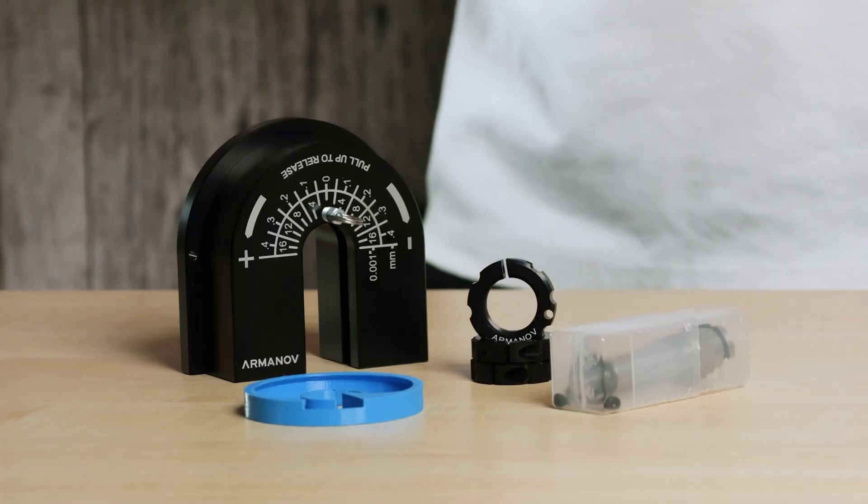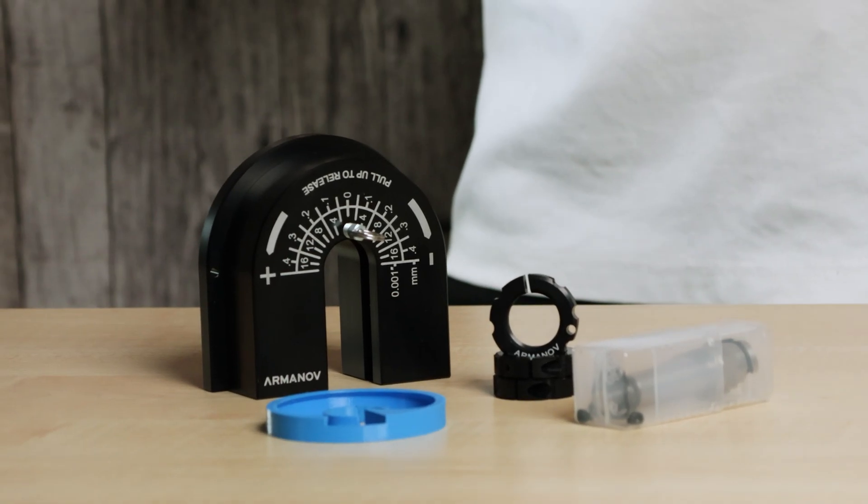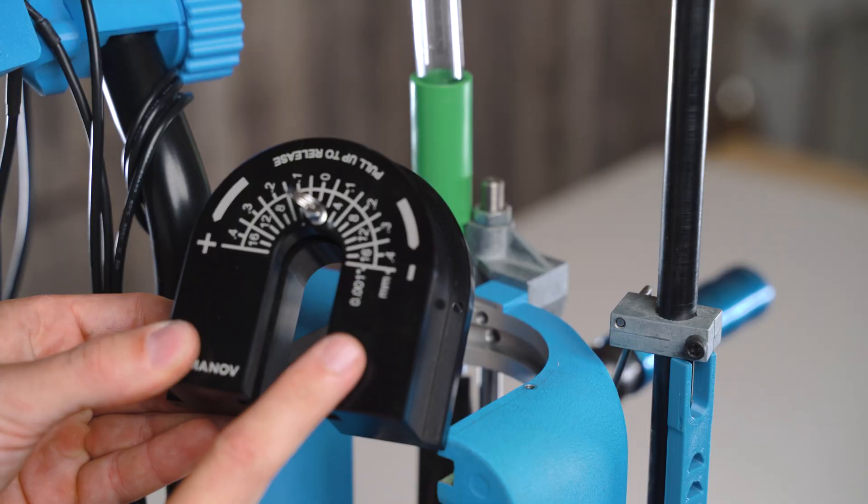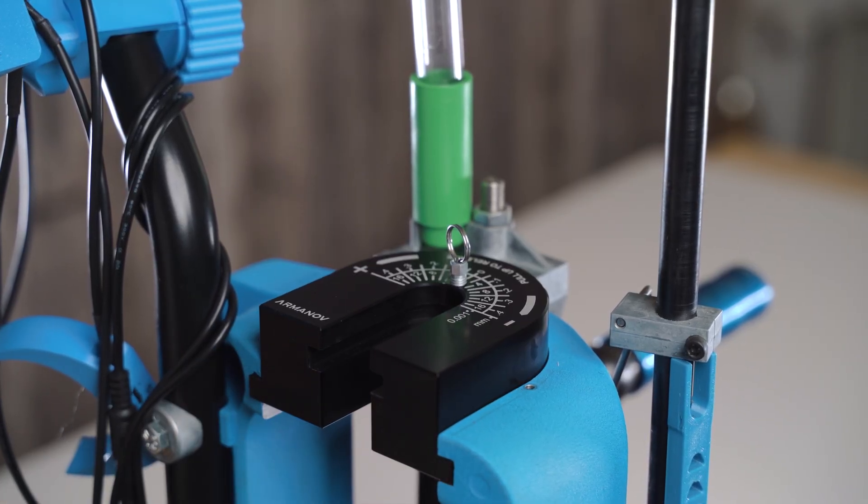You can use your Dillon XL650 or 750 machine for both bulk reloading where precision is not so important, or if you need to reload a small batch of special ammunition where you need very high precision, you can switch to the single stage conversion kit on your Dillon in just a few seconds.